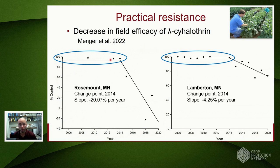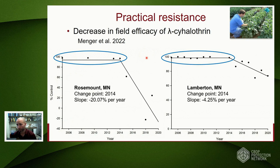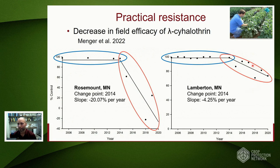From 2005 to 2014, the pyrethroid lambda-cyhalothrin applied to our plots was working very well—with nearly 100% efficacy, killing almost all the aphids. However, starting after 2014 at both sites, we see a very drastic decrease in percent control. This analysis identifies 2014 as the change point or tipping point—the last year lambda-cyhalothrin was working well at these locations. At Lamberton the efficacy was decreasing at about 4% per year, while at Rosemont we had nearly a 20% decrease per year.